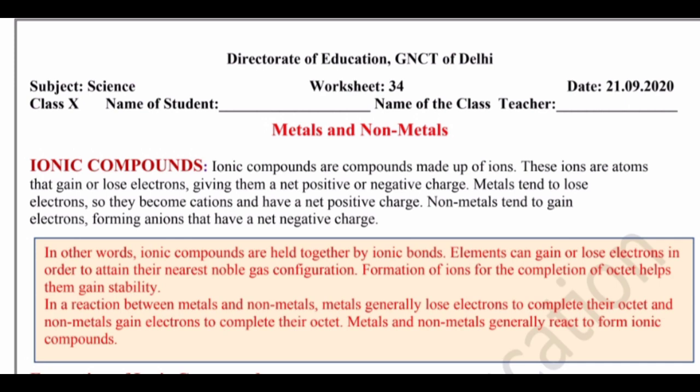Ions kya hote hain? These are charged particles — avishit kaan, charge particles. Agar koi atom electrons apna de de, stable hone ke liye electron de, to woh positive charge ho jata hai. Aur koi stable hone ke liye electron le le to woh negative charge ho jata hai. Positive charge jo ions hote unko cations kehte hain.